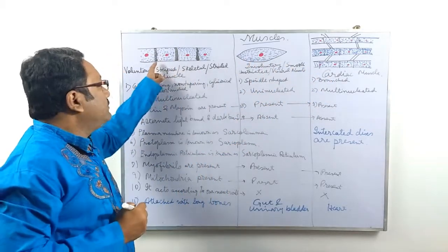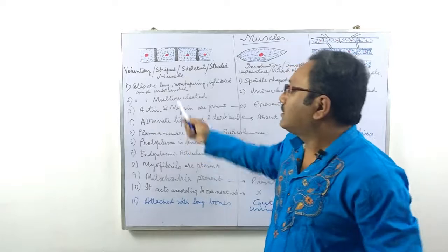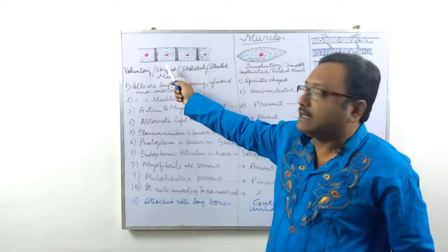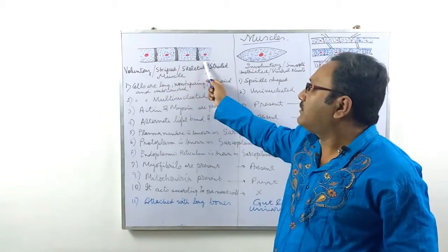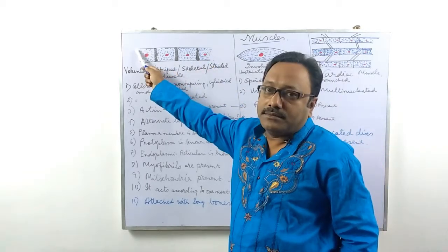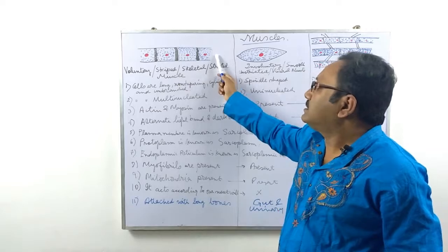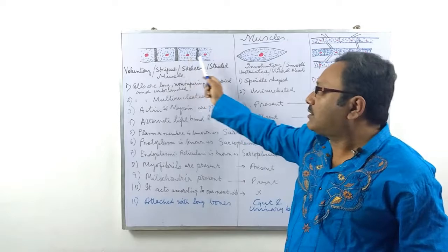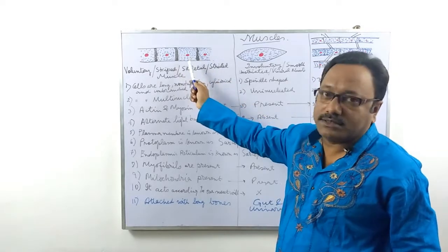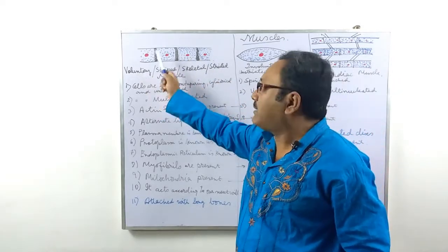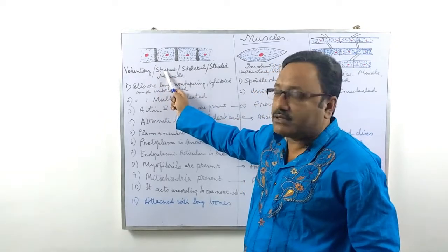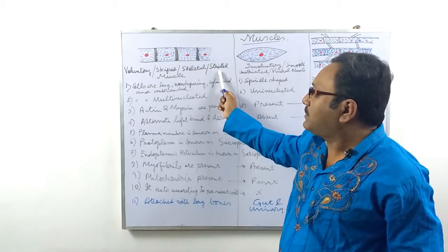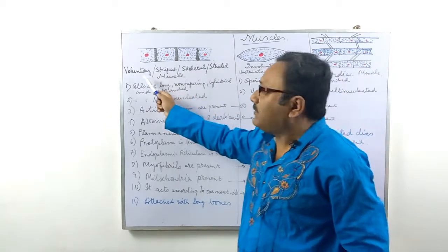In the voluntary muscle, we see that the cell is a little bit barrel-shaped or cylindrical in shape. There are many names for voluntary muscles: it can be called striped muscle, skeletal muscle, striated muscle, and voluntary muscle.